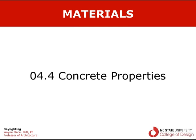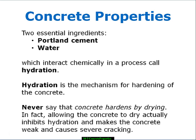This video is on concrete properties. There are two essential ingredients in concrete: Portland cement and water. These two ingredients interact chemically in a process called hydration. The water actually becomes incorporated in the final chemical composition of the hardened cement. Hydration is the mechanism for hardening of the concrete.